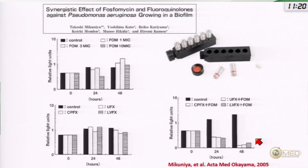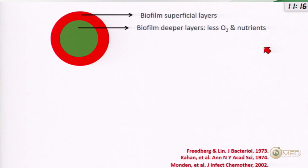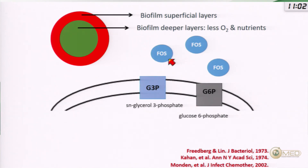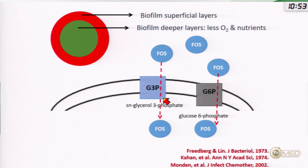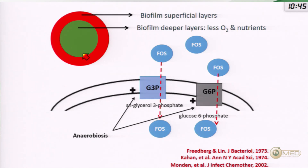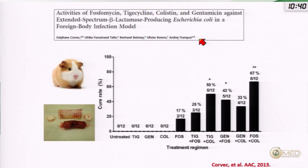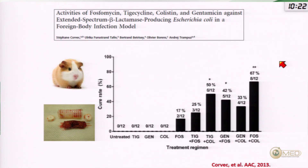Fosfomycin appears active against the deeper layers of the biofilm — similar to polymyxins. This is explained by fosfomycin uptake mechanisms in the bacterial membrane that are upregulated under anaerobiosis, as found in the deeper biofilm layers. So fosfomycin and polymyxins are complementary to the second drug: they have unique targets in the deeper biofilm layers. In the guinea pig model for fosfomycin, monotherapies again perform poorly in biofilm-embedded infections, but combinations of fosfomycin plus colistin, fosfomycin plus gentamicin, and fosfomycin plus tigecycline all have significantly better performance.